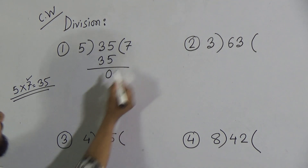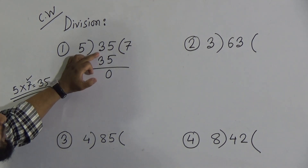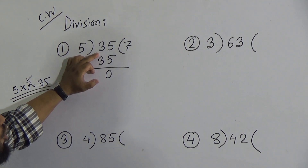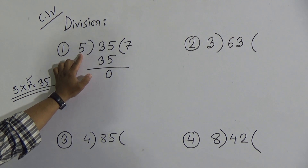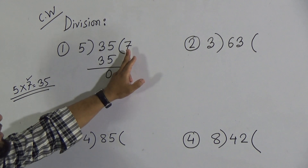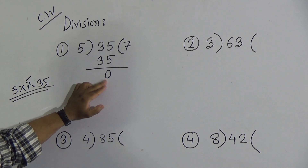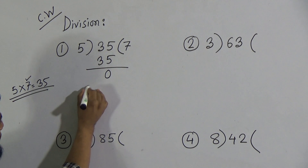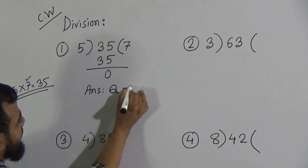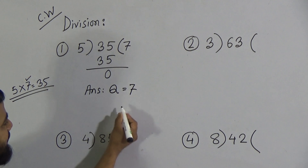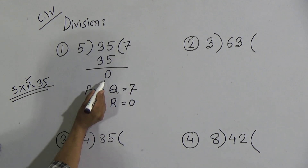This 7 is called our quotient and this 0 is called our remainder. To recap: the number that needs to be divided is called the dividend — here 35 is our dividend. The number by which division is done is called the divisor — 5 is our divisor. The result of division is called the quotient — 7 is our quotient. What remains is called the remainder — 0 is our remainder. Write down the answer: Q = 7, R = 0.